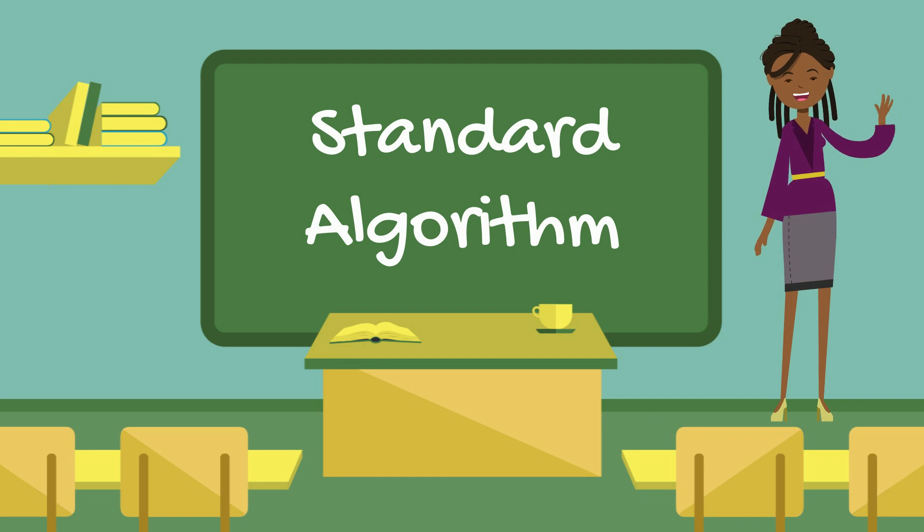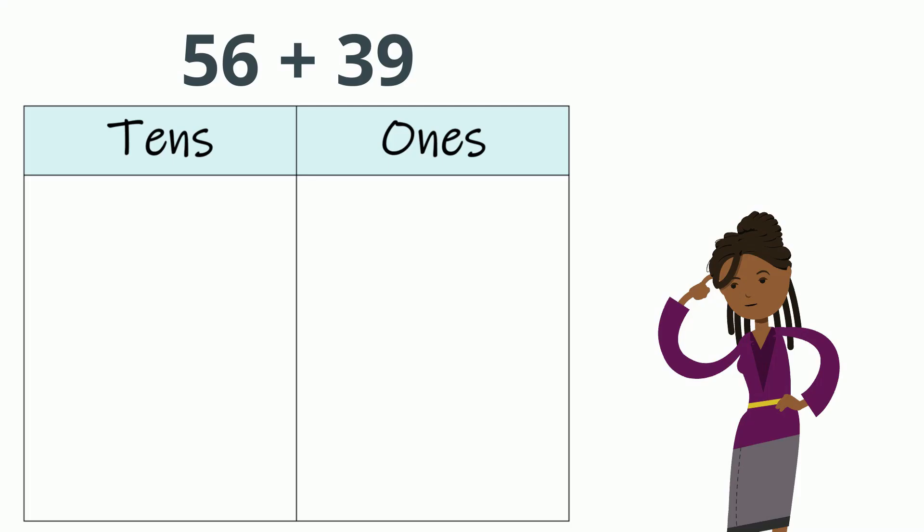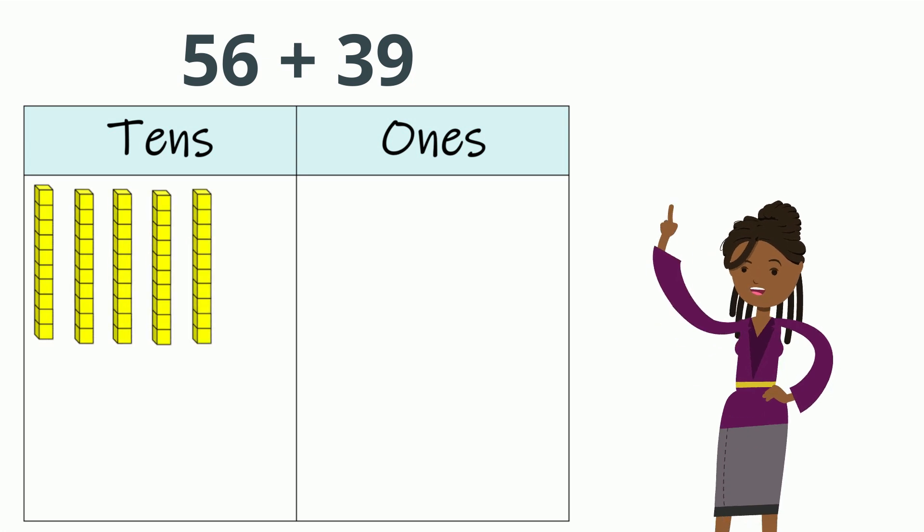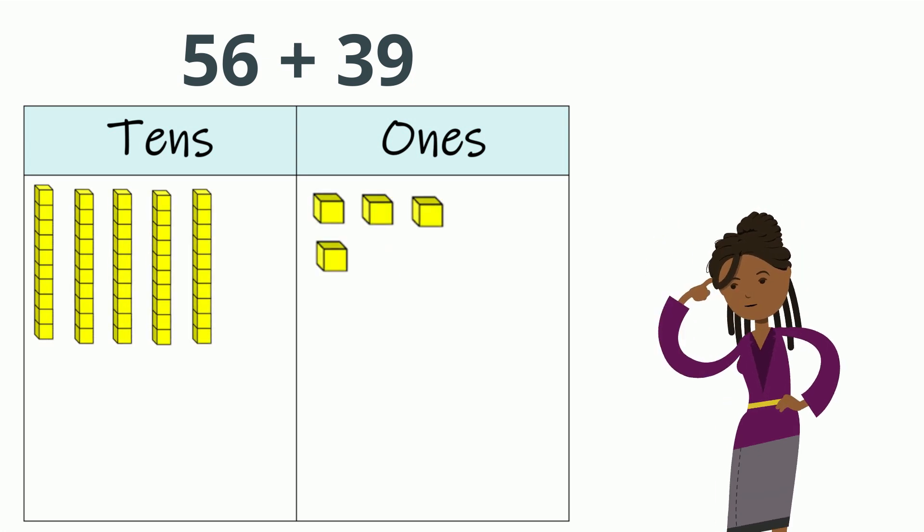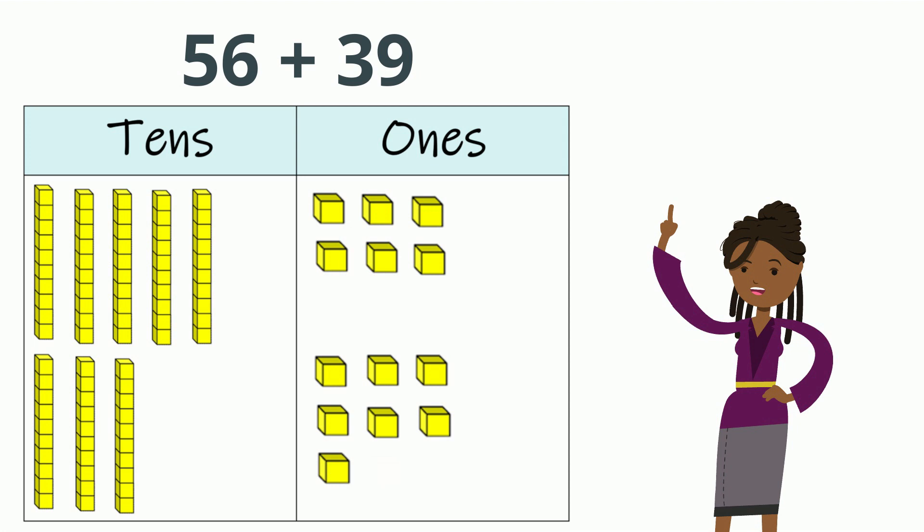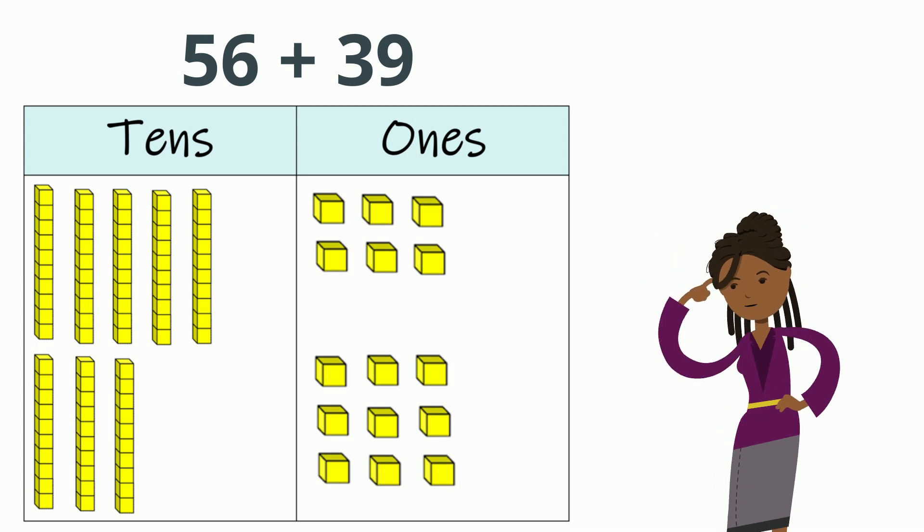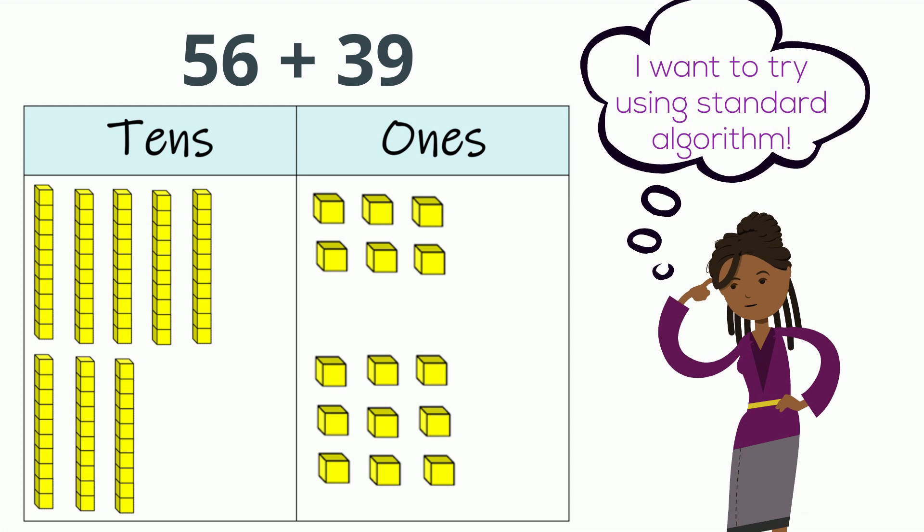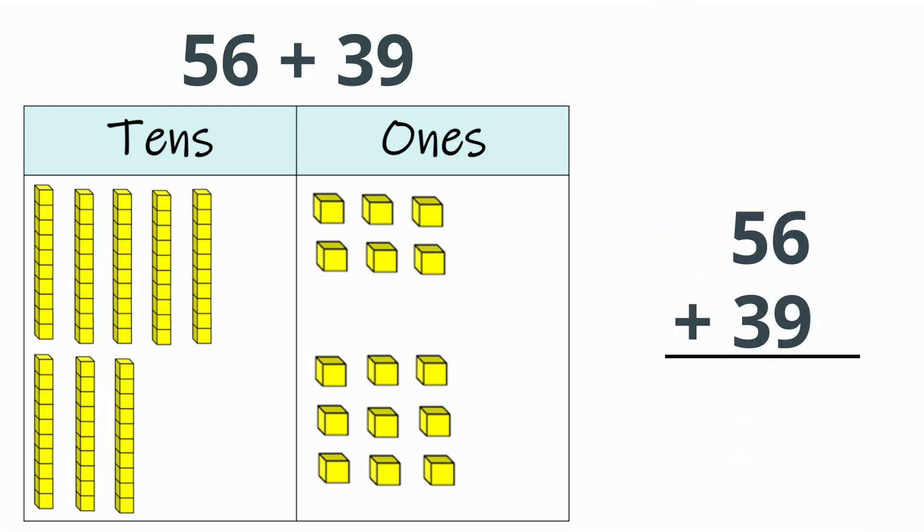Let's apply what we've learned to see how regrouping with addition helps with using the standard algorithm. My next example shows the equation 56 plus 39. When I break apart these numbers, I see 56 is five 10s and six 1s. And 39 is three 10s and nine 1s. I can use this to help me solve my math problem by using the standard algorithm written like this. Notice that these numbers are still listed with 10s and 1s. Are we able to regroup some 1s to form a new 10? Yes!